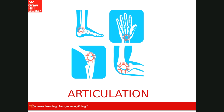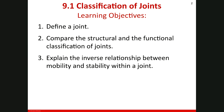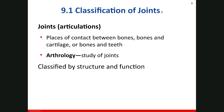The learning objective of this chapter is the definition of a joint. Then I want to compare the structural and functional classification of the joints. And after that, I want to explain the inverse relationship between the mobility and the stability which we have for the joints. A joint or an articulation is the place of contact between bones, between bone and cartilage, or between bone and teeth.